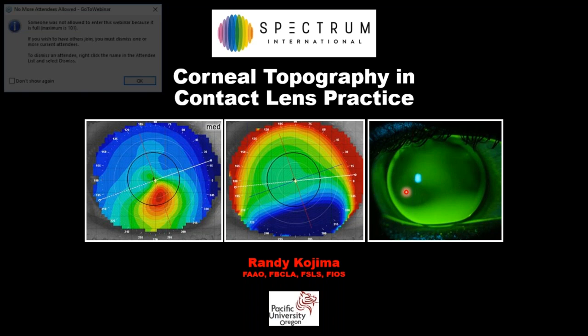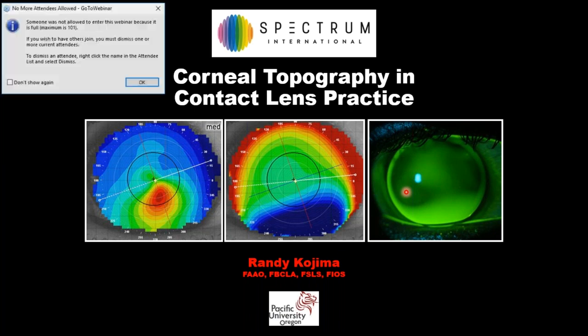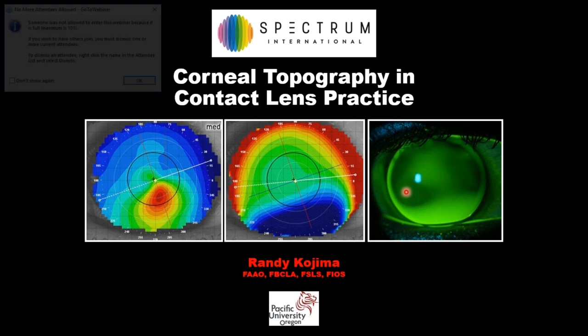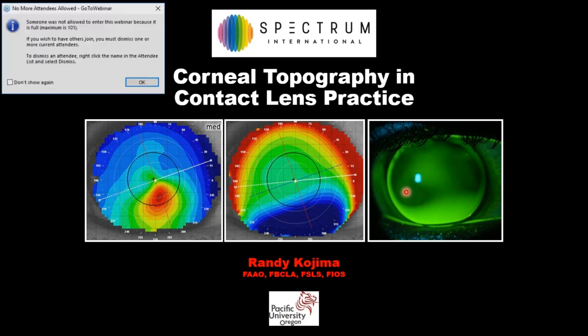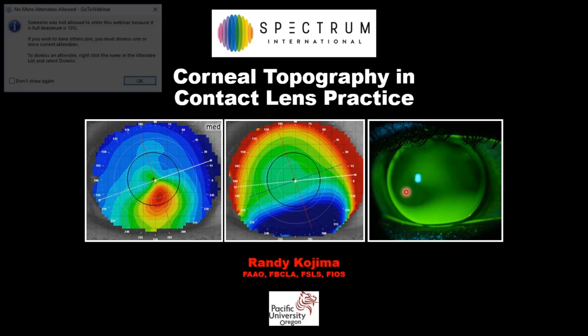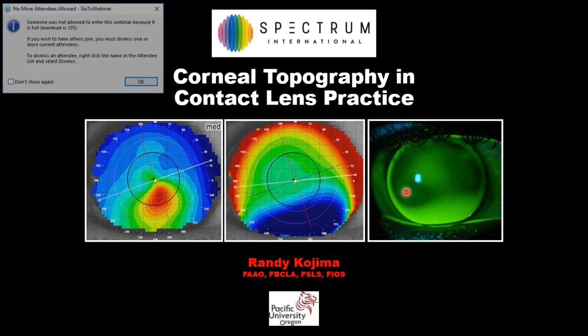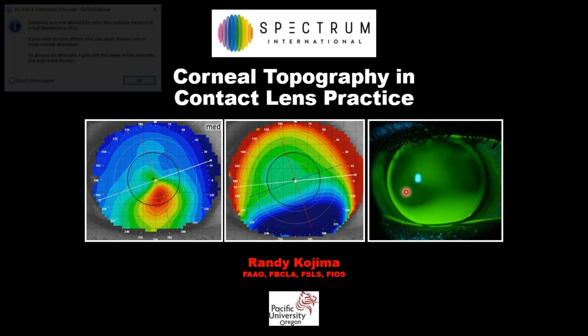Con un topógrafo y una lámpara de hendidura podemos ver cómo un lente se asienta en una córnea, ver dónde levanta y ver dónde hace un acúmulo de lágrimas. Al final del día, una lámpara de hendidura sería la herramienta más específica. However, if you want to be efficient in practice, there is no better way to be efficient in specialty contact lenses than with a corneal topographer.